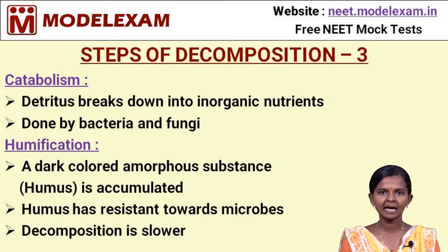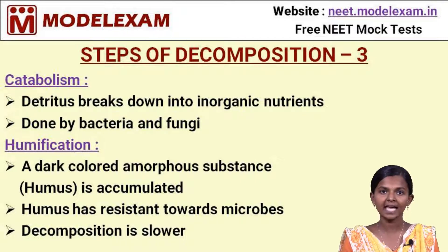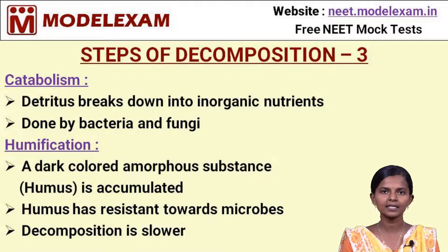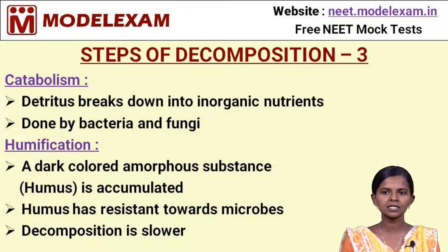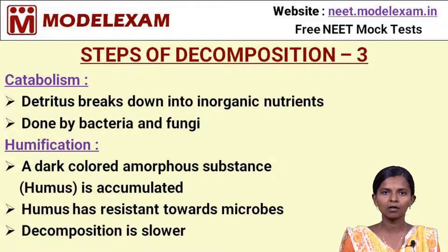Catabolism is the process where detritus or litter is broken down into inorganic nutrients that can be used by plants. This breakdown is carried out by organisms such as bacteria and fungi. Humification is the process involving the breakdown of humus, which is a dark-coloured amorphous substance found accumulated in the soil. Humus is resistant to microbes, so decomposition of humus is slower.